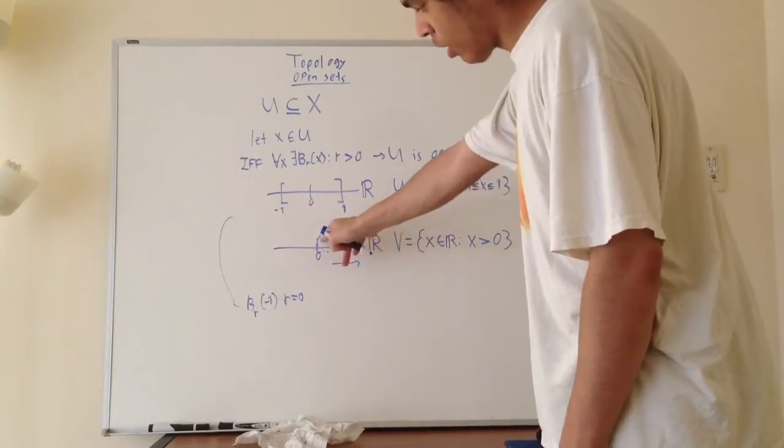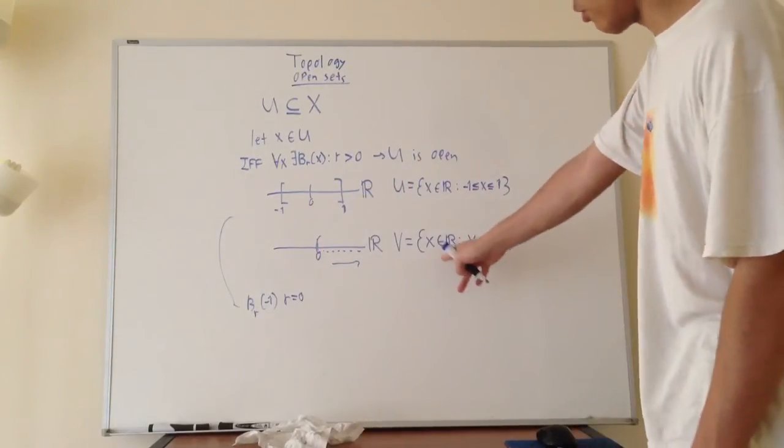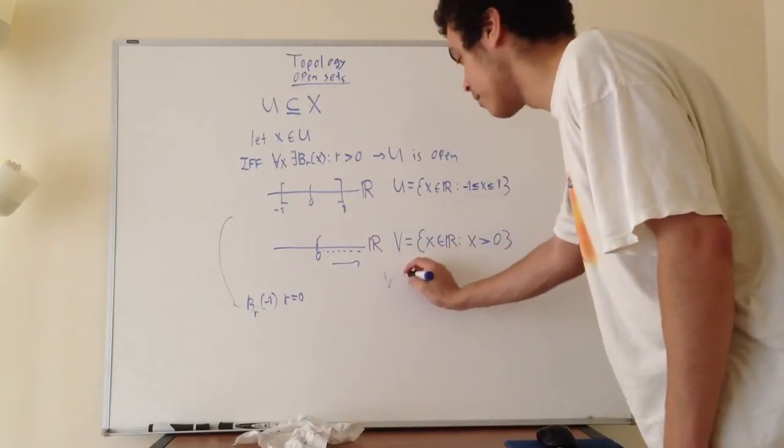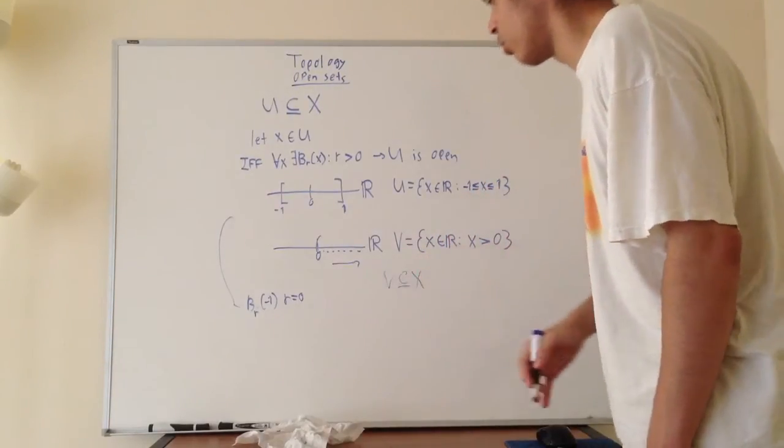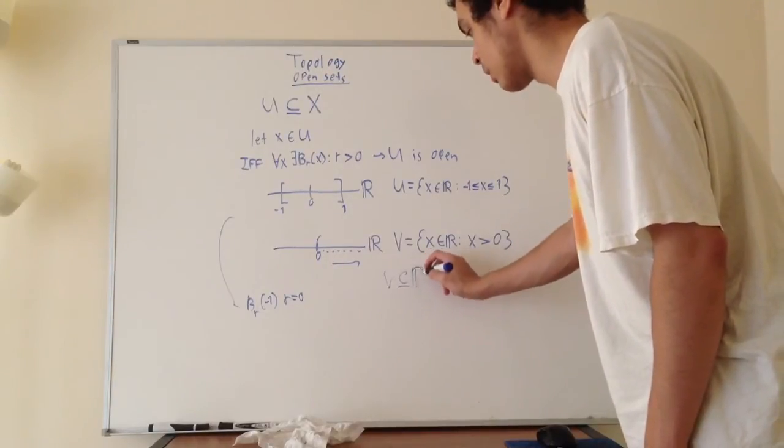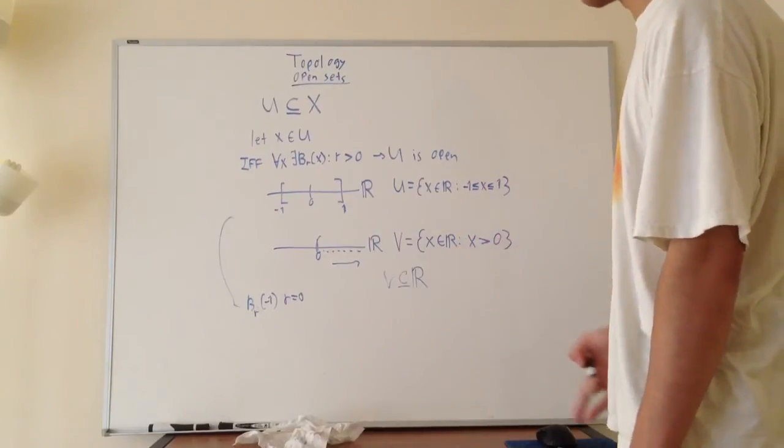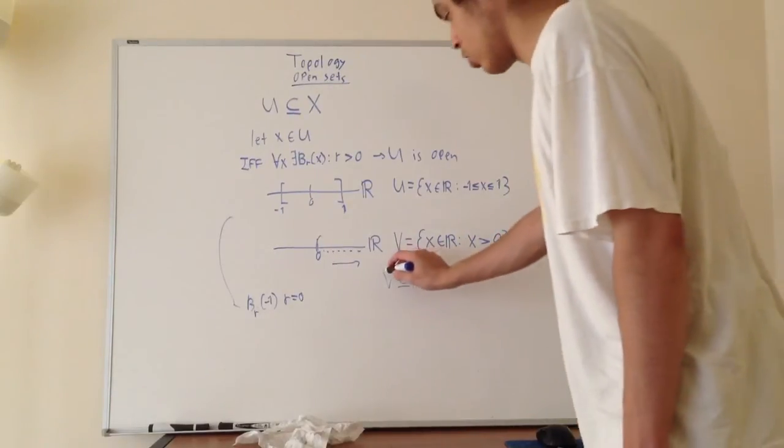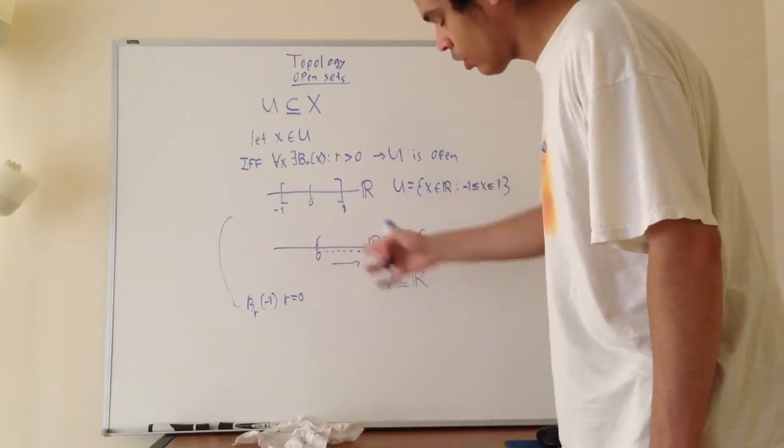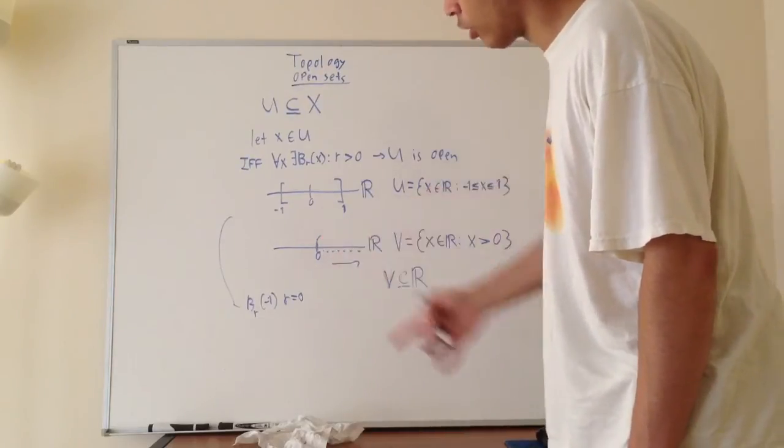Let's suppose we have the open interval from zero all the way to infinity. We can write it like this: v is a subset of some larger set x, which is really just the real numbers. So x is a member of the real numbers such that x is greater than zero. Is this an open set? You probably already know the answer. It is an open set because the zero is not included here.